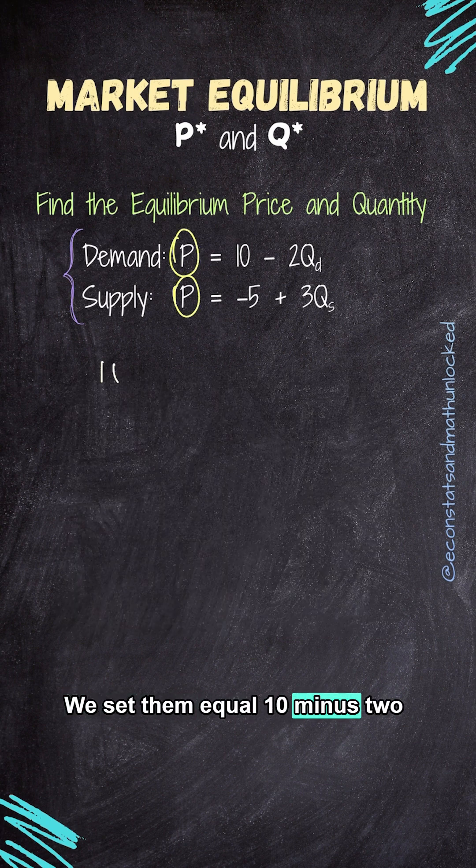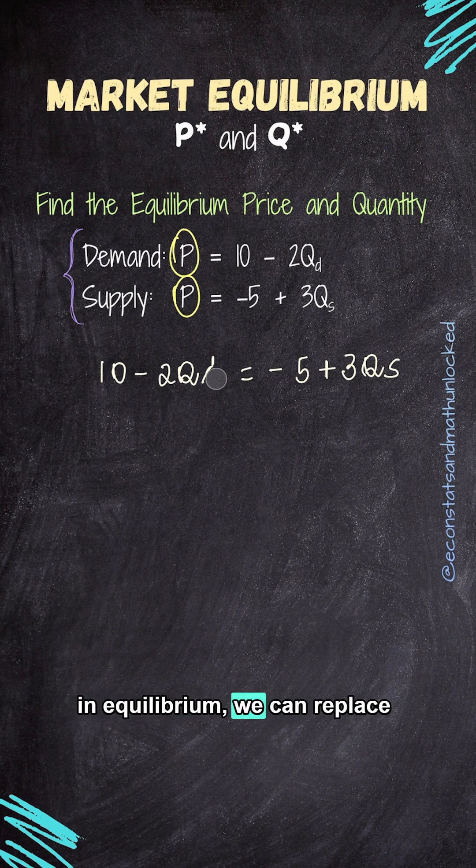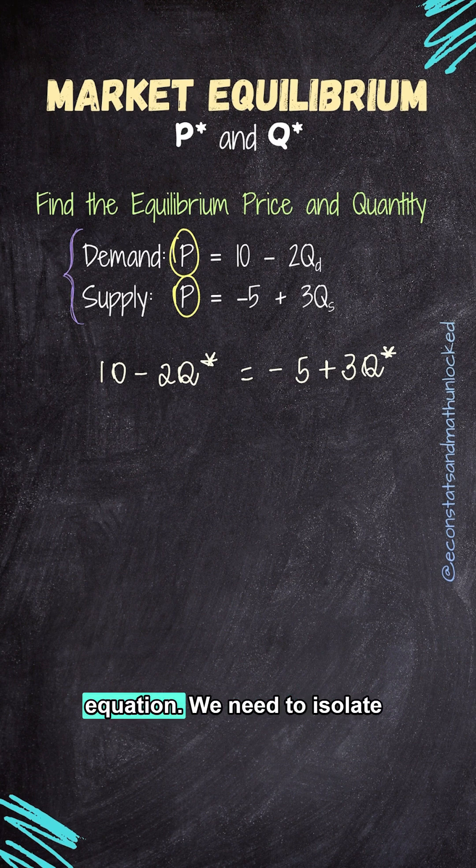We set them equal: 10 minus 2QD equals minus 5 plus 3QS. Since the quantities are equal in equilibrium, we can replace both QD and QS with Q star. Now let's solve this first degree equation. We need to isolate Q star on one side and all other terms on the other.